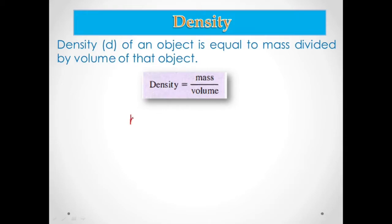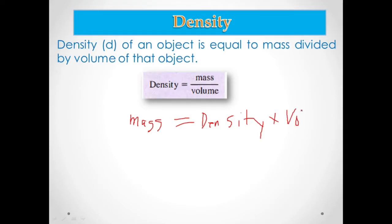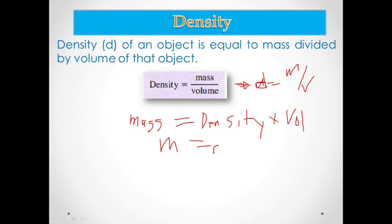If the mass is unknown, you can get the mass by multiplying density times the volume. We can rewrite this using symbols: density equals m over v. You can get the mass by multiplying density times volume, or if the volume is unknown, you can get the volume by dividing mass by the density.